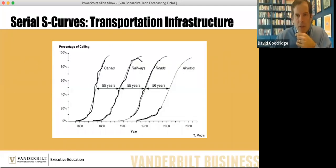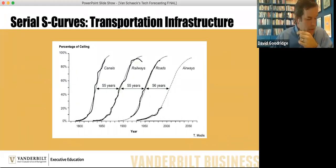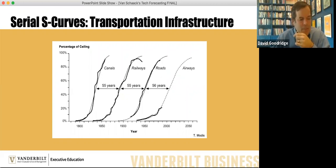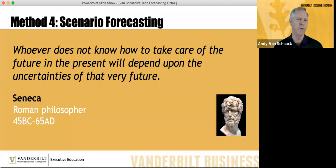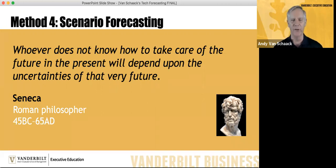There are a number of patterns with trend extrapolation. It's not just fitting a curve through three points mathematically — it's about understanding the underlying mechanisms and picking the right type of curve. Now we're on our last one: scenario forecasting. Here's a quote from Seneca: 'Whoever does not know how to take care of the future and the present will depend upon the uncertainties of that very future.' That really is the promise of today's webinar. It's one thing to predict the future, but we want to plan and prepare for it. We take information from the monitoring method, from Delphi and Trend, and feed it in as information that allows us to create scenarios — stories of the future we can use for planning purposes.